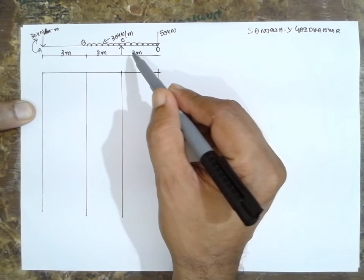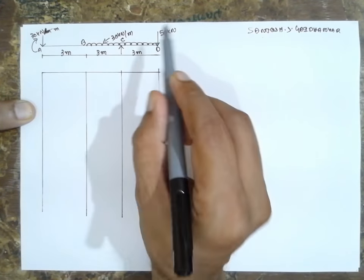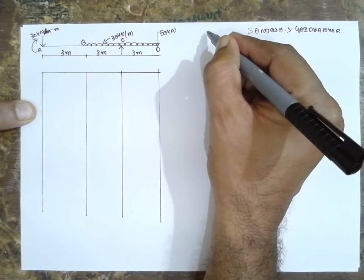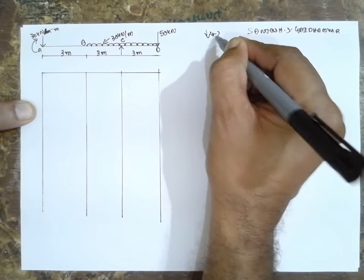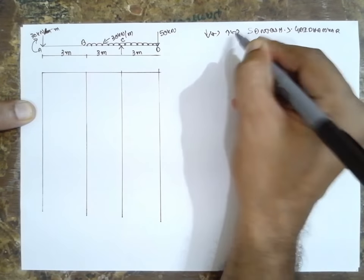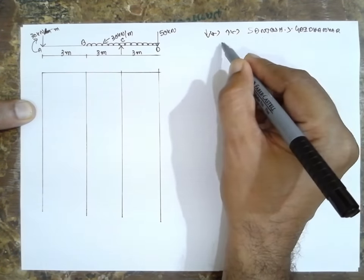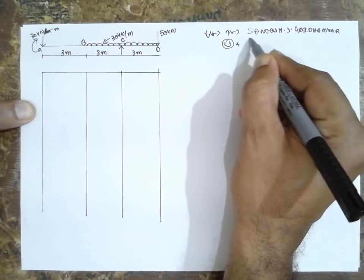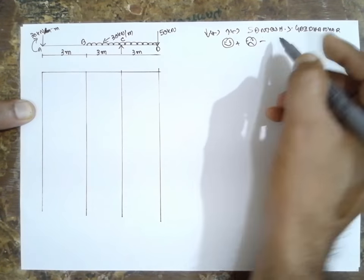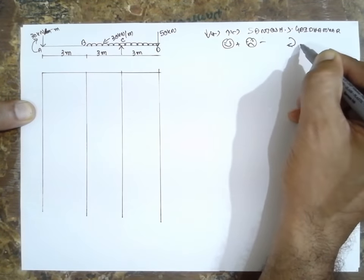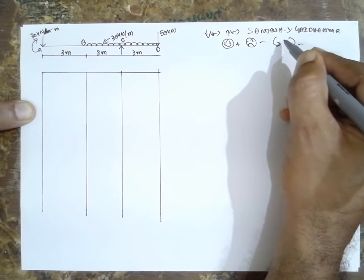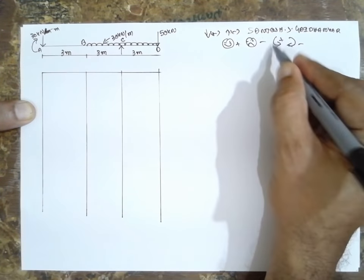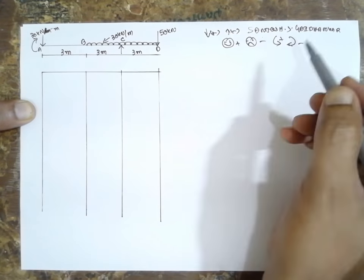Today I am solving the problem of an overhanging beam with a couple and UDL. Sign convention: downward arrow is positive, upward arrow is negative, sagging is positive, hogging is negative. A couple in the clockwise direction will be negative and anticlockwise will be positive.